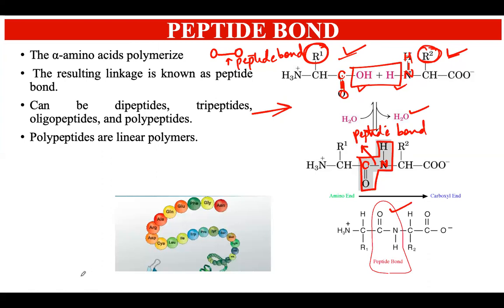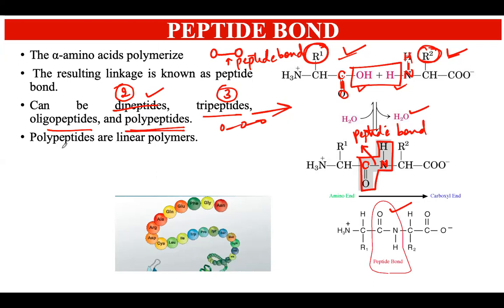Proteins can be dipeptides, tripeptides, oligopeptides, or polypeptides. Dipeptides contain two amino acids, tripeptides have three amino acids linked together, oligopeptides have approximately fewer than 10, and if there are more than 10 amino acids, it is a polypeptide. Polypeptides are linear polymers, meaning they have a linear structure.